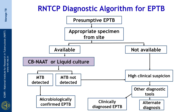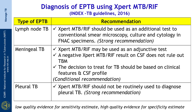For the extra-pulmonary TB algorithm, collecting appropriate specimen from the site is key. Subject it to microbiology via CB NAAT or liquid culture. It will either detect MTB — giving a confirmed diagnosis in a relatively small proportion — or not. A larger proportion, 50 to 60 percent or more, will not have MTB detected. That does not rule out TB. If there is still high clinical suspicion, use other diagnostic tools such as X-ray, neuroimaging, biochemistry, and cytology for effusions to make a clinically diagnosed EPTB or confirm an alternative diagnosis.